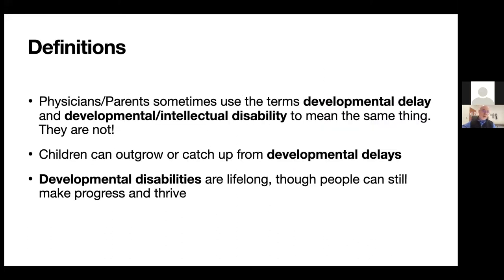I want to talk about definitions, because we often use incorrect vocabulary when thinking about these children, particularly regarding developmental delay versus developmental disability. Children can be developmentally delayed and can outgrow or catch up to the normal range, while children who have a developmental disability typically face a chronic, lifelong issue.